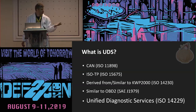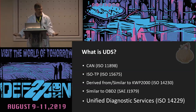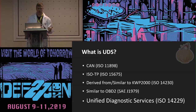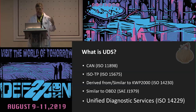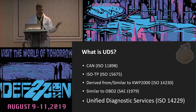CAN has a limit of eight bytes per message, so if you want to send anything bigger than eight bytes — like firmware to an ECU on a car — you're going to need to use a higher-level protocol to segment that up into multiple messages. ISOTP is a segmentation layer, kind of like IP, and then you have UDS itself, which you can think of like UDP or TCP.